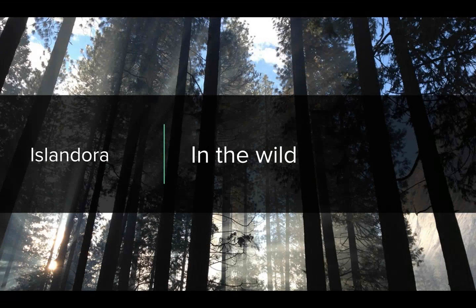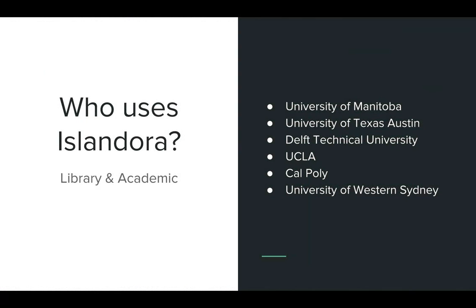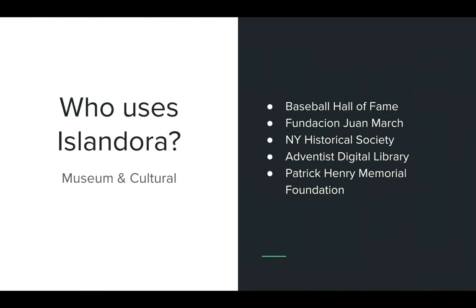Let's take a quick look at some of the types of organizations using Islandora. In library and academics: universities, academic libraries, academic departments, and individual scholars use Islandora — examples being University of Manitoba, UCLA, Cal Poly, Boston College, University of Missouri, and many more. In the museum and cultural world, that includes the Baseball Hall of Fame, New York Historical Society, and the Adventist Digital Library.